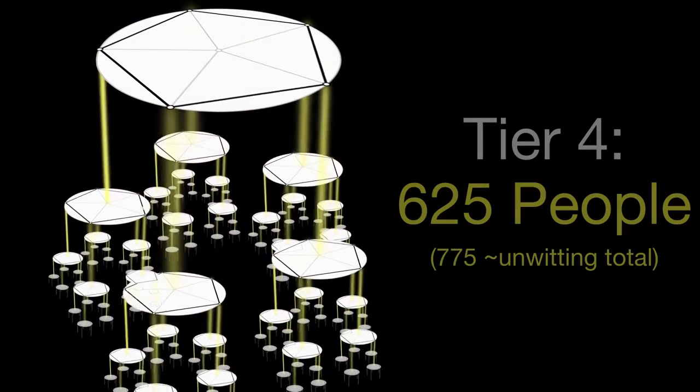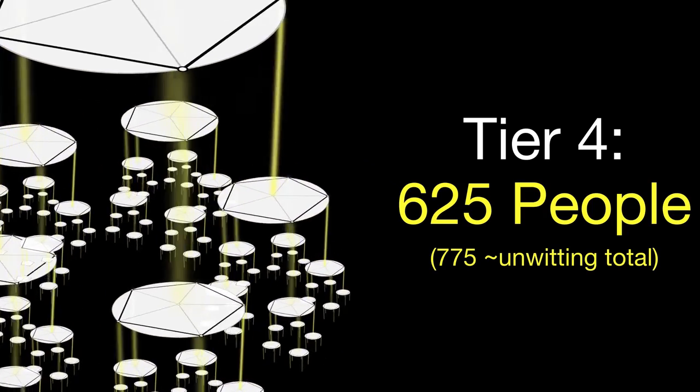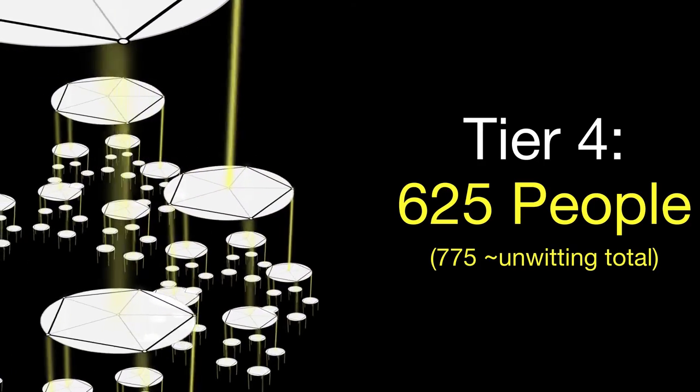In such a compartmentalized hierarchy, adding a fourth tier could then accomplish five separate tasks requiring more than 100 people, for a total of 775 partially unwitting participants.